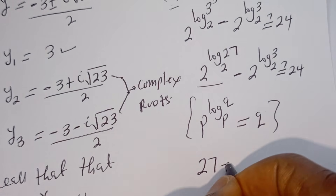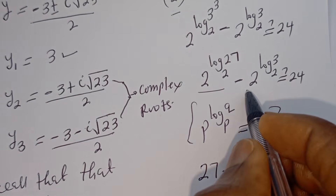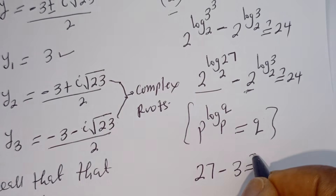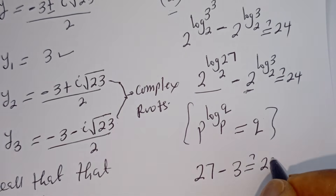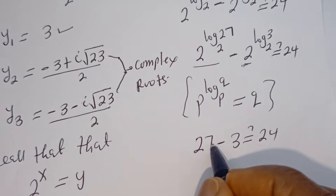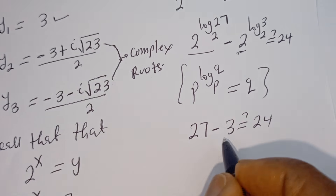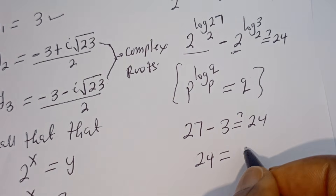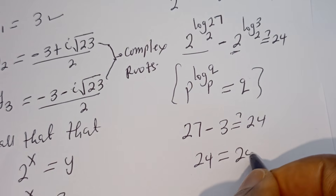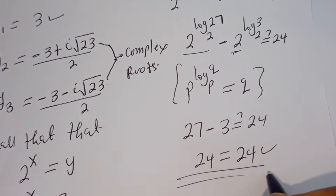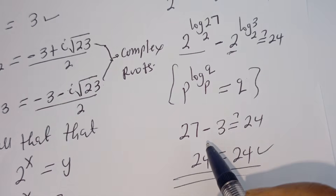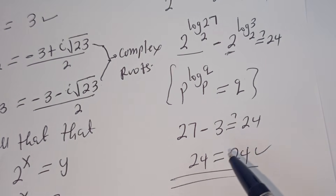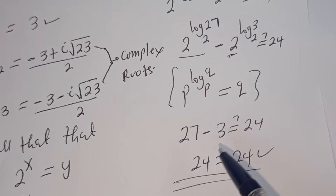We get 27 minus 3, that is 24, is equal to 24, which is true. I hope you enjoyed the video. Thank you for watching. Please don't forget to like, share, comment, and subscribe to my channel. Bye.